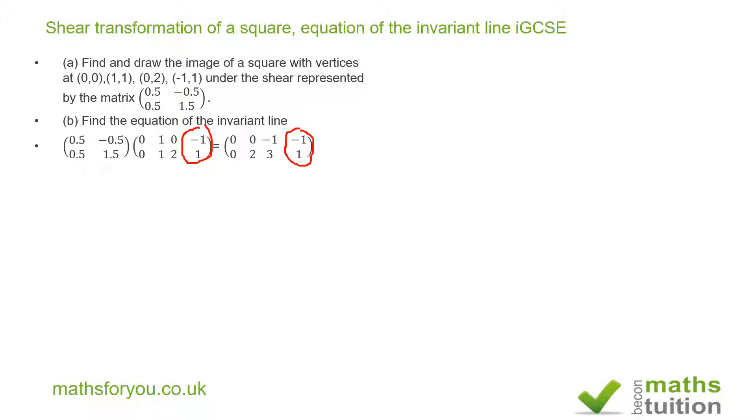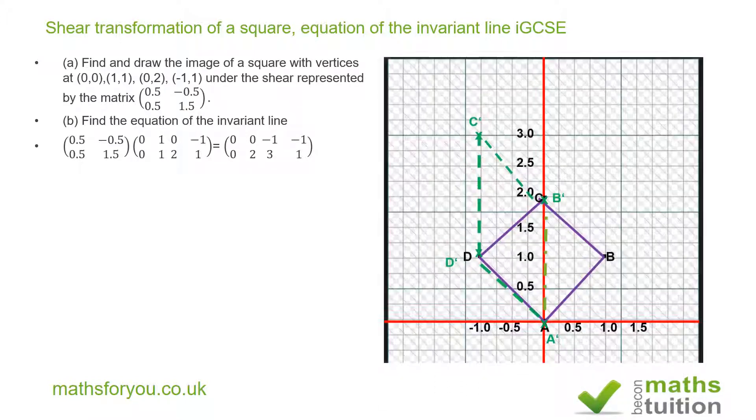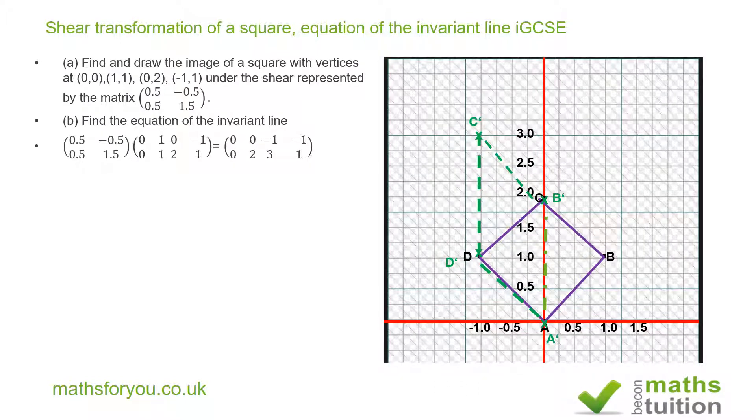Now if I draw my diagram I end up with something like this. The square is in purple and the transformed image or the image after transformation will be in green.